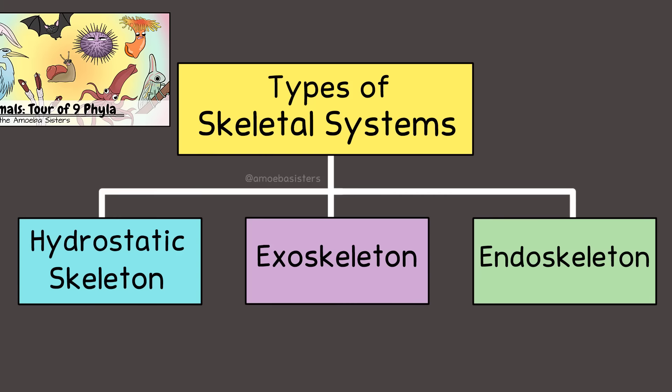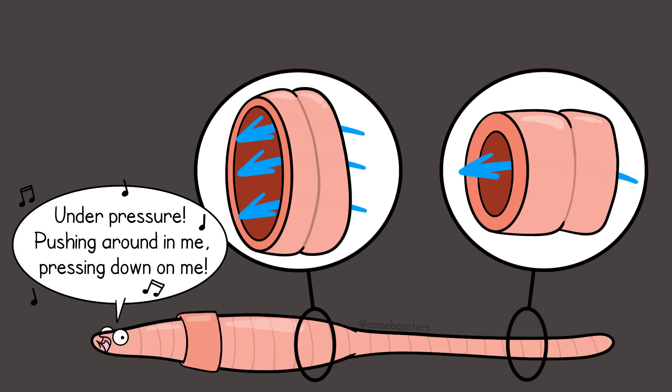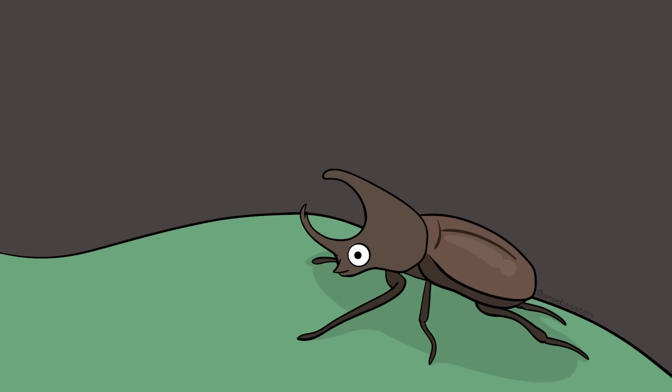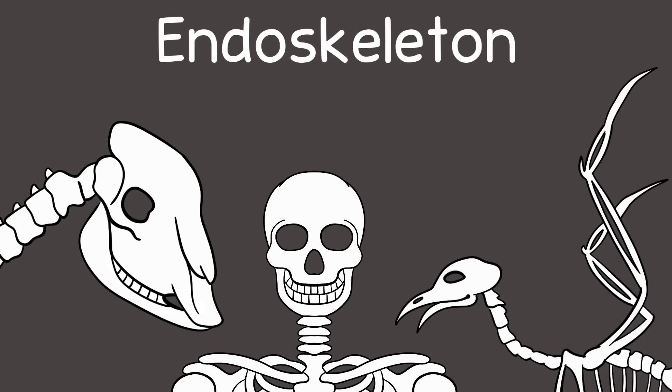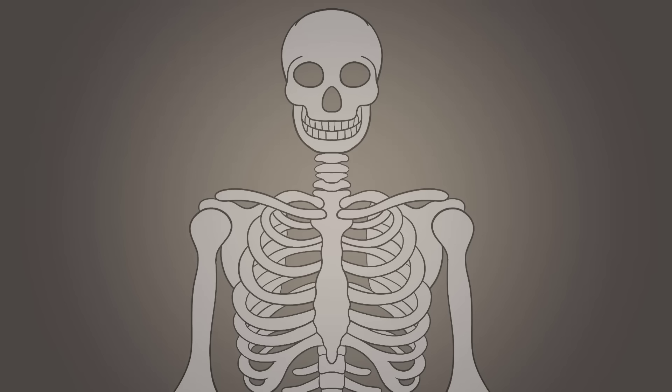There are many different kinds of skeletal systems in different organisms. Earthworms have a hydrostatic skeleton, a skeleton that is filled with liquid and kept under pressure. Insects have an exoskeleton, a hard outer skeleton made of chitin. In order to grow, most insects have to molt, which involves shedding their old exoskeleton. Many other animals have a hard skeleton on the inside, called an endoskeleton.